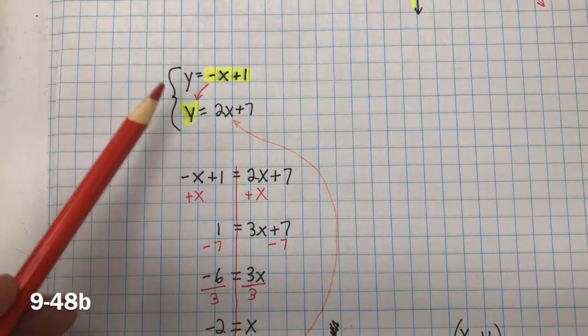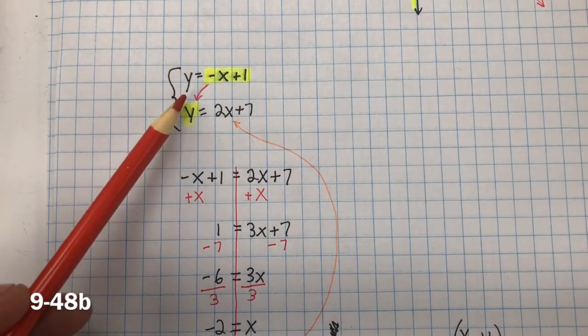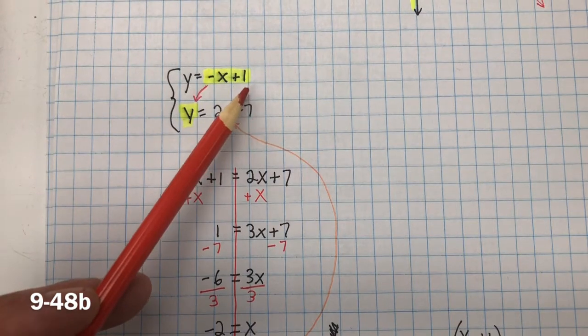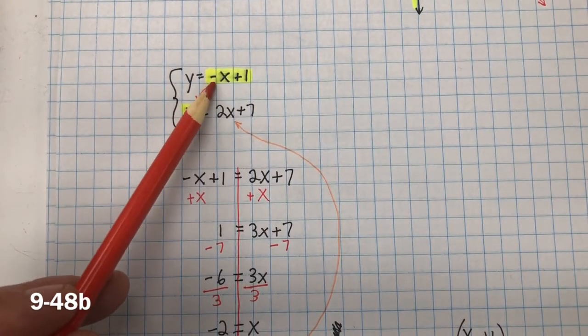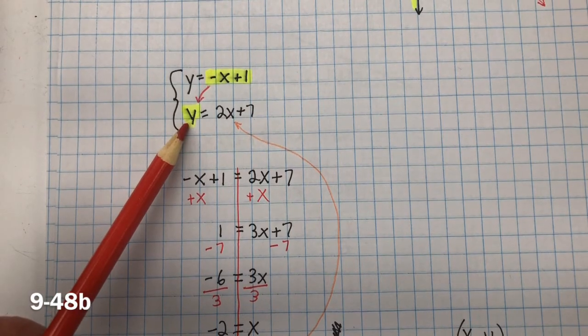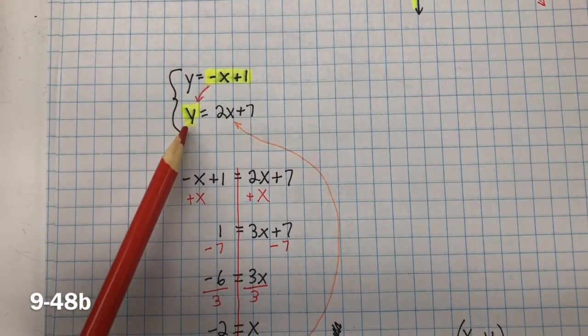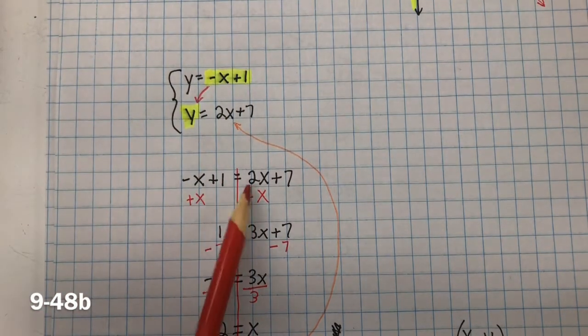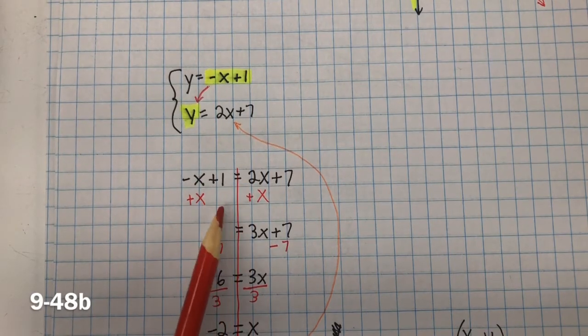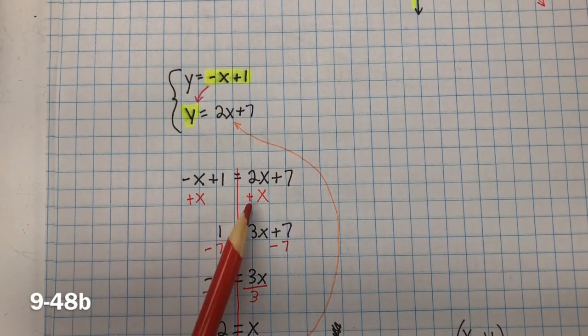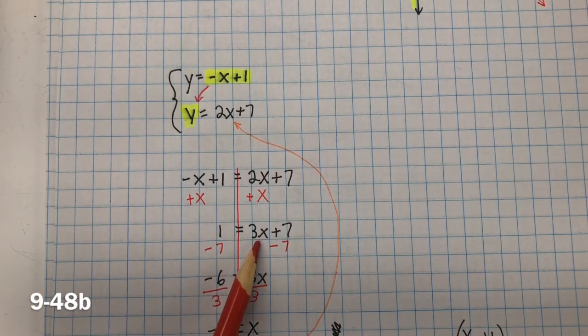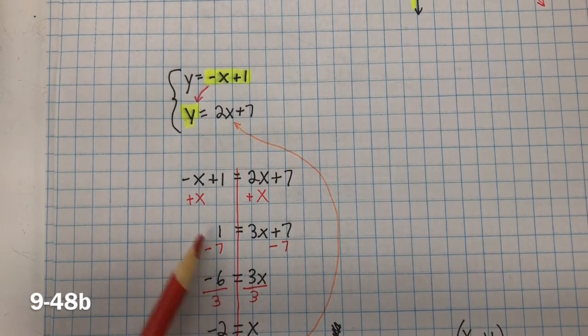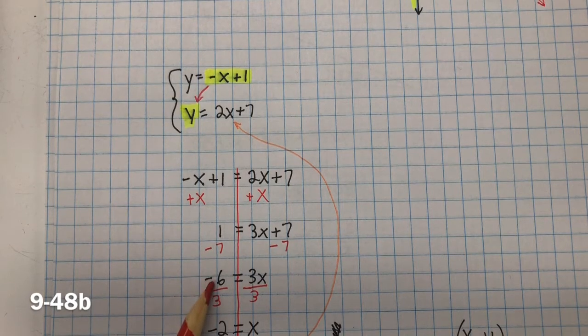For 48B, we needed to solve the system by equal values method. And so we know that Y equals negative X plus 1. So if that's what Y equals, we could substitute it into this equation for Y. So instead of Y, we're going to have negative X plus 1. That's where we got it from here. And now that we set these two equations equal to each other, we solve for X. Add X to both sides, and now we have 3X. Inverse property of addition and subtraction, we subtract 7 from both sides. 1 minus 7 is negative 6.